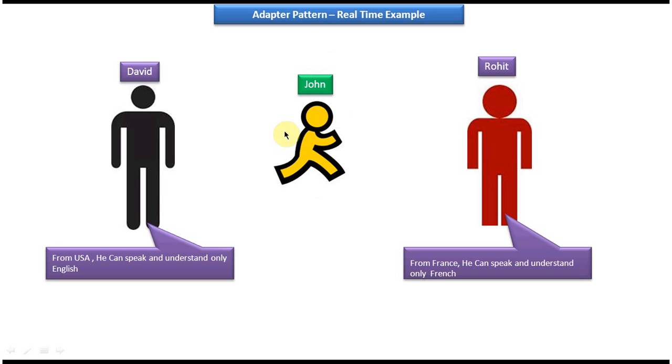Suppose David wants to ask 'how are you' to Rohit. So what this David will do is he will tell 'how are you' to John first. So what John will do is he will convert this 'how are you' to French and he will send this comment allez-vous to Rohit.